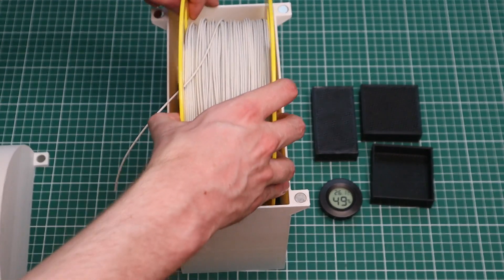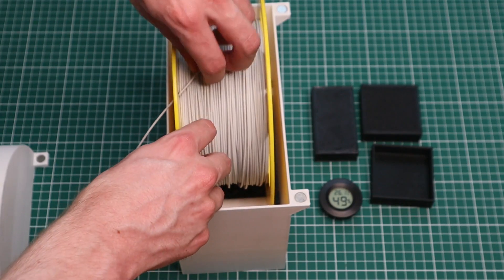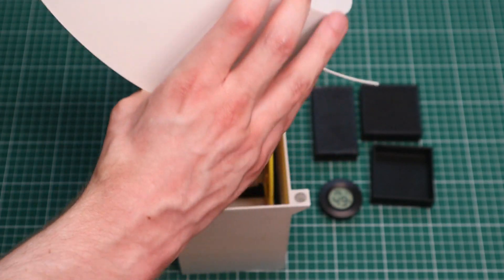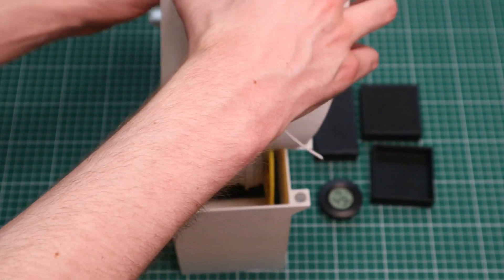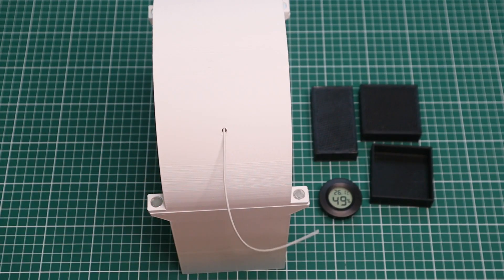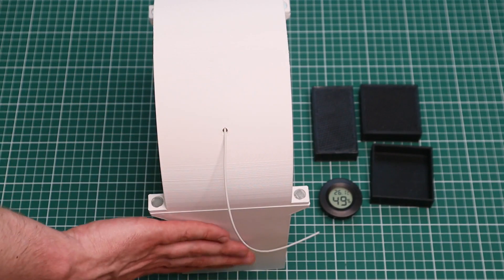Then I have to take the filament off of the spool, thread that through the hole here, and then I can finally put the lid on like so. And that just becomes a whole lot more convenient if the hole is just part of the base.